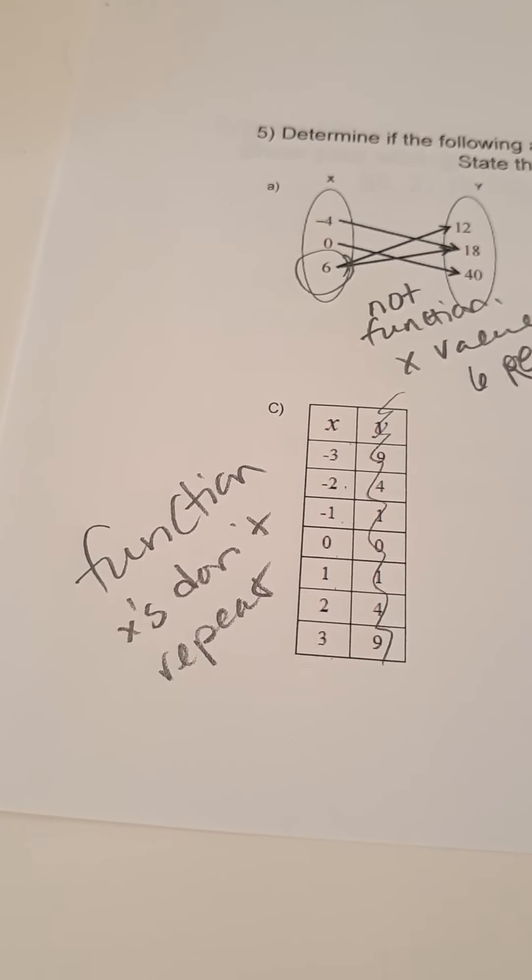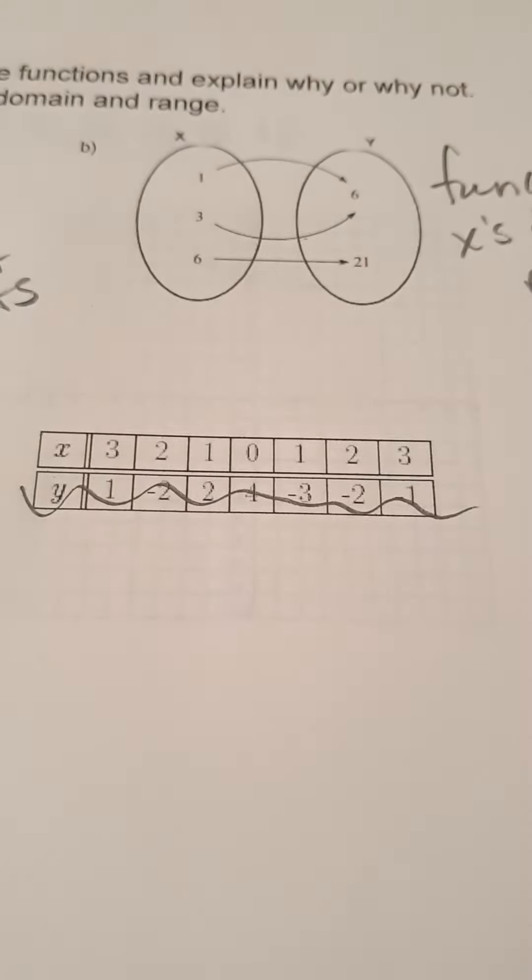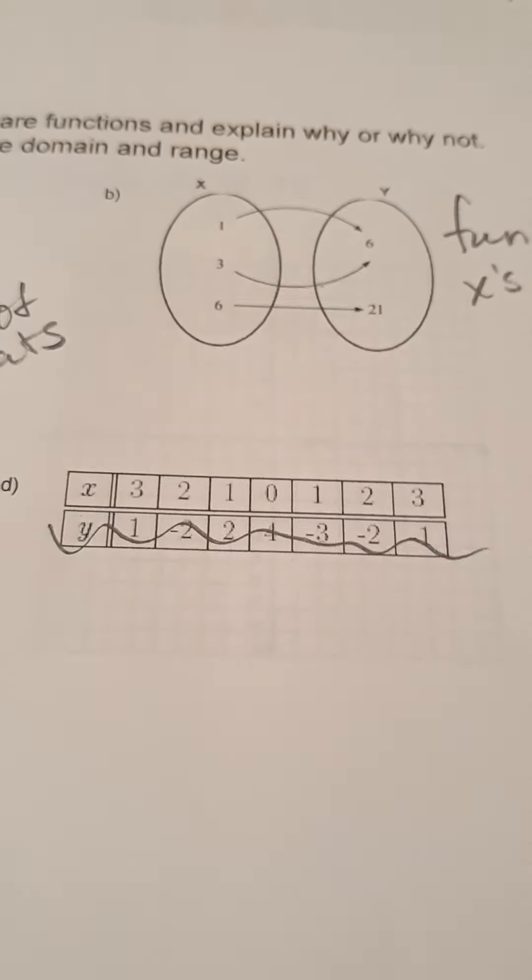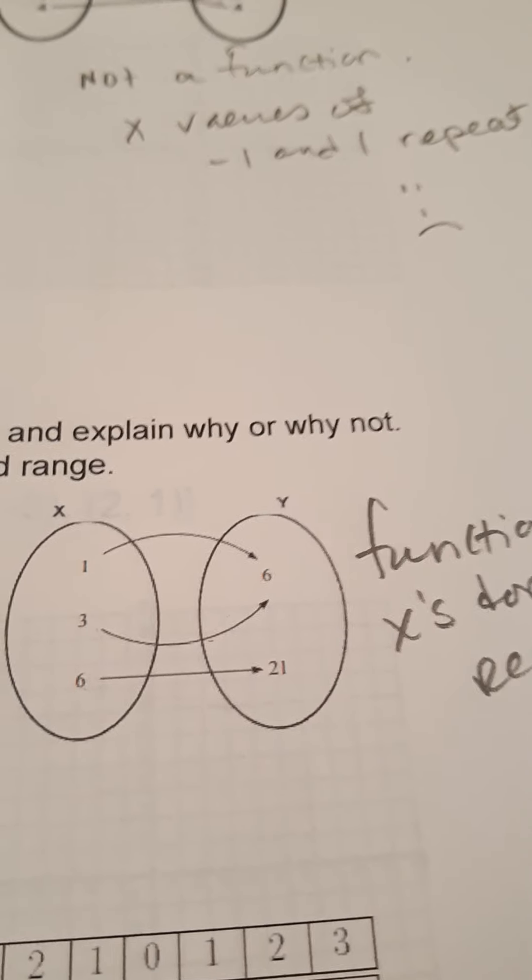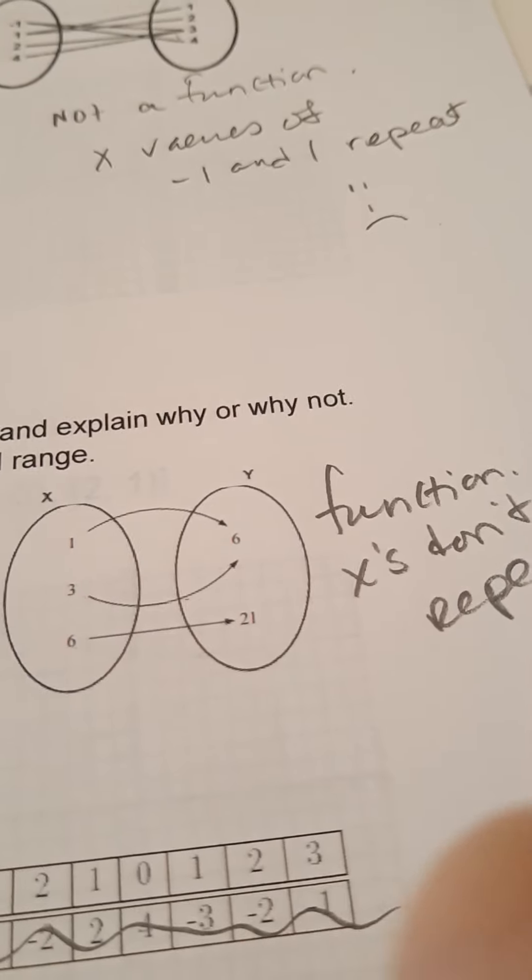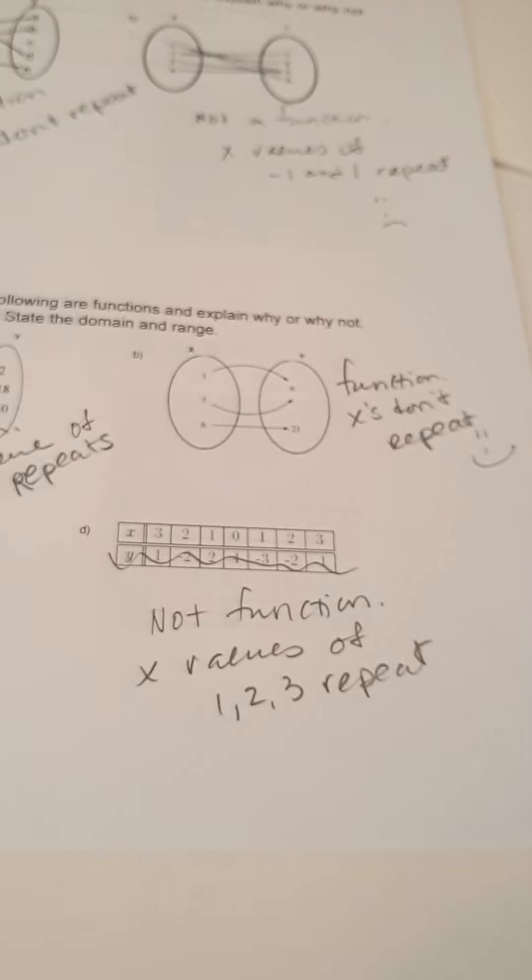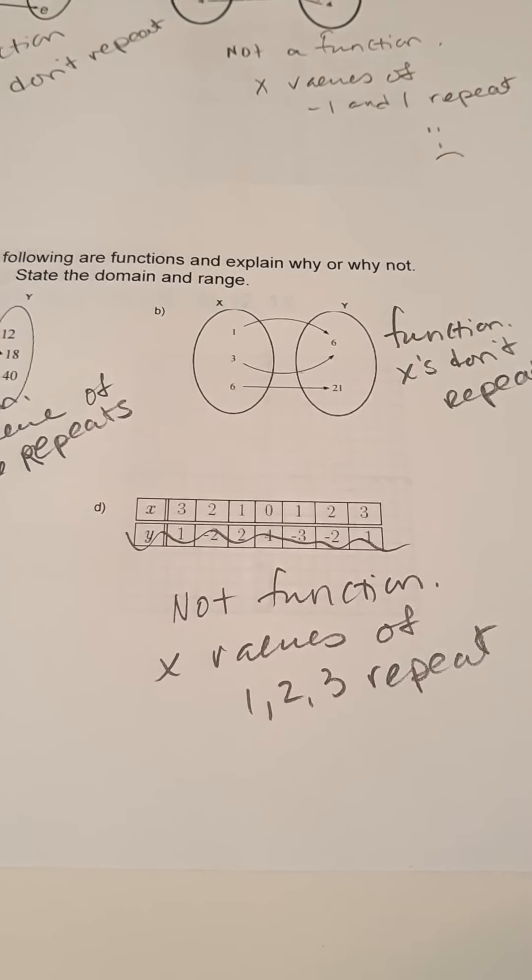All right. And d. You can get dramatic. You could cross out your y's. They have no impact on the answer that you're answering, the question that you're answering. Are the x's repeating? They are. Like, every x value is repeating. So, this is not a function. You want to say it's not a function. x values of 1, 2, and 3 repeat. Can you hear my children arguing in the background? Gotta love it.